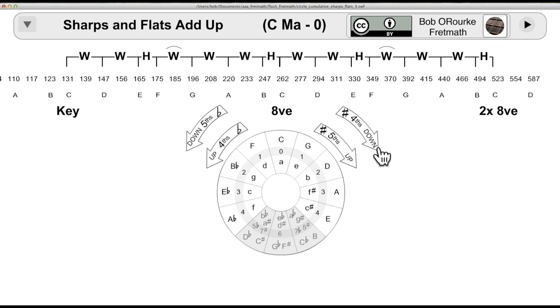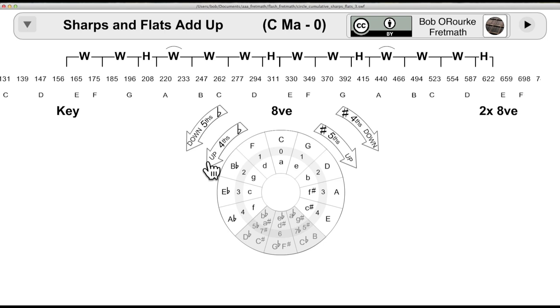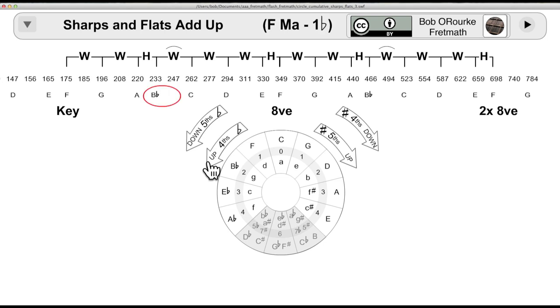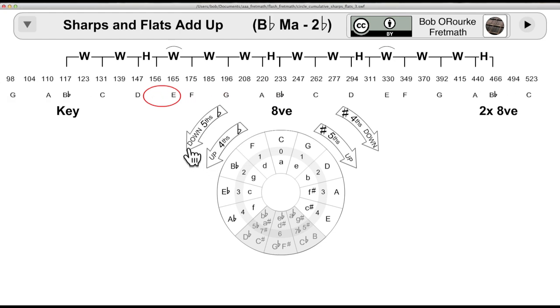The flats go counterclockwise around the circle, up a fourth or down a fifth. Starting again from C, which has no sharps or flats, the algorithm here flattens the fourth degree of the scale. B to B flat, E to E flat, A to A flat, D to D flat. That's enough flats for me for now.